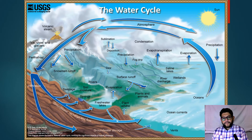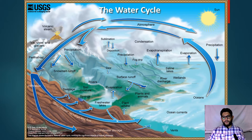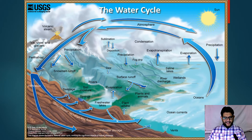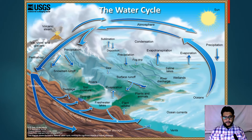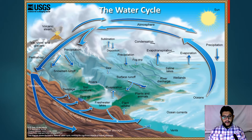An easy way to remember a lot of these cycles is to look at the ending of the words. Most of the terms in this cycle — not all, but most — end in '-ation.' So this is what I tell my students: it's the '-ation' cycle. There's condensation, there's evapotranspiration, or just transpiration as you see it, and there's precipitation. And then there's evaporation on its own.